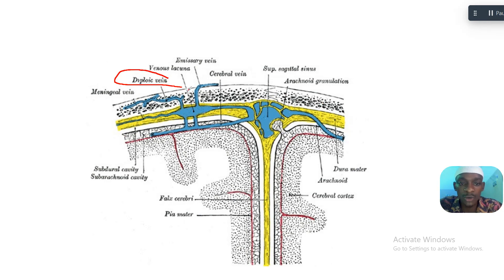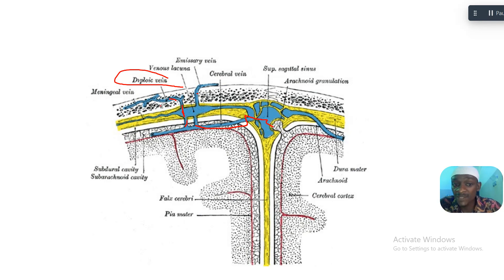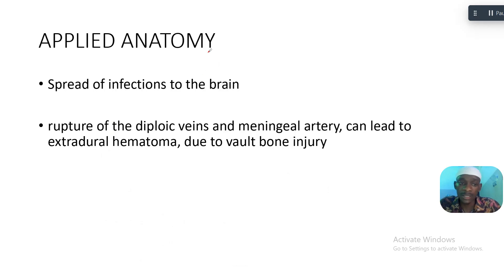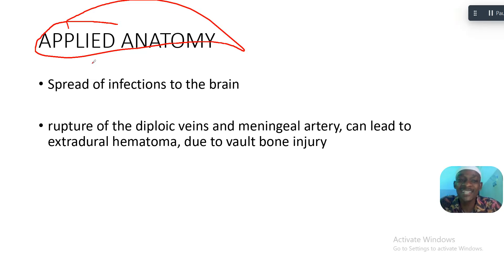The diploic veins are communicating veins, meaning blood — and therefore infection — can spread rapidly through them to different areas. An infection in the diploic vein will spread very fast because they link different parts, transporting blood from one side to another.